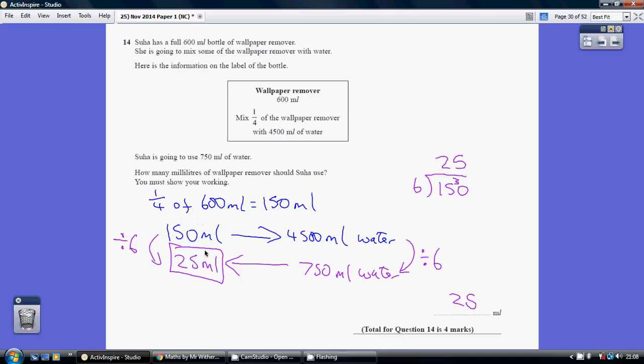So we know that 150 millilitres equates to using 4,500 millilitres of water. So 150 millilitres of wallpaper remover, 4,500 millilitres of water. Now, we're being told that we're going to use 750 millilitres of water.